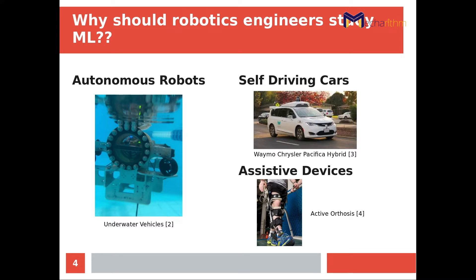You also have the application of assistive devices, which are used to improve the quality of life for the differently abled and the elderly. For example, machine learning is implemented for gait recognition, which is a part of a greater scheme called human activity recognition, to provide suitable actuation torques for assistance.